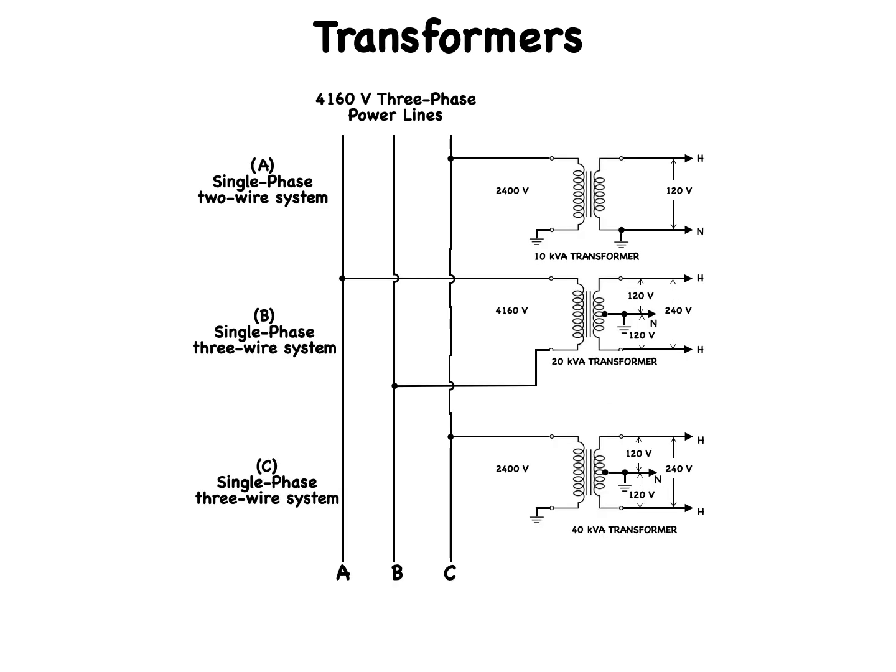Single-phase systems can be of two major types: a single-phase two-wire system, shown in A — the top diagram — or a single-phase three-wire system, shown in B and C — the middle and bottom diagrams. These systems are shown here as 10 kVA, 20 kVA, and 30 kVA transformers whose secondary produces single-phase voltages of 120 and 240 volts.